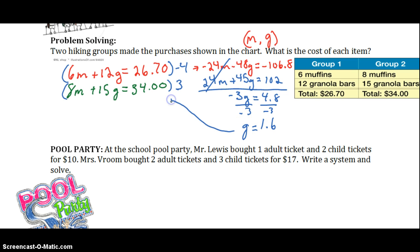Then we can plug that back into our equation and solve for the price of the muffins. So, we have 8m plus 15 times 1.6 equals 34. So, we end up getting 8m plus 24 equals 34. So, if we subtract 24 from each side, we'll be left with 8m equals 10. Divide each side by 8. So, we're left with m equals 1.25. Okay, so our final answer is going to be muffins cost $1.25.